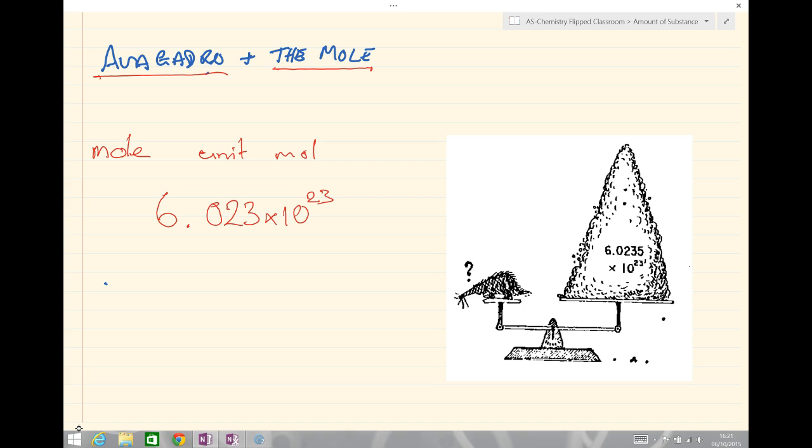Let's look at a very simple example. If we had carbon plus oxygen going to make carbon dioxide, this tells me that I have one mole of carbon atom will react with one mole of oxygen molecules to make one mole of carbon dioxide molecules.